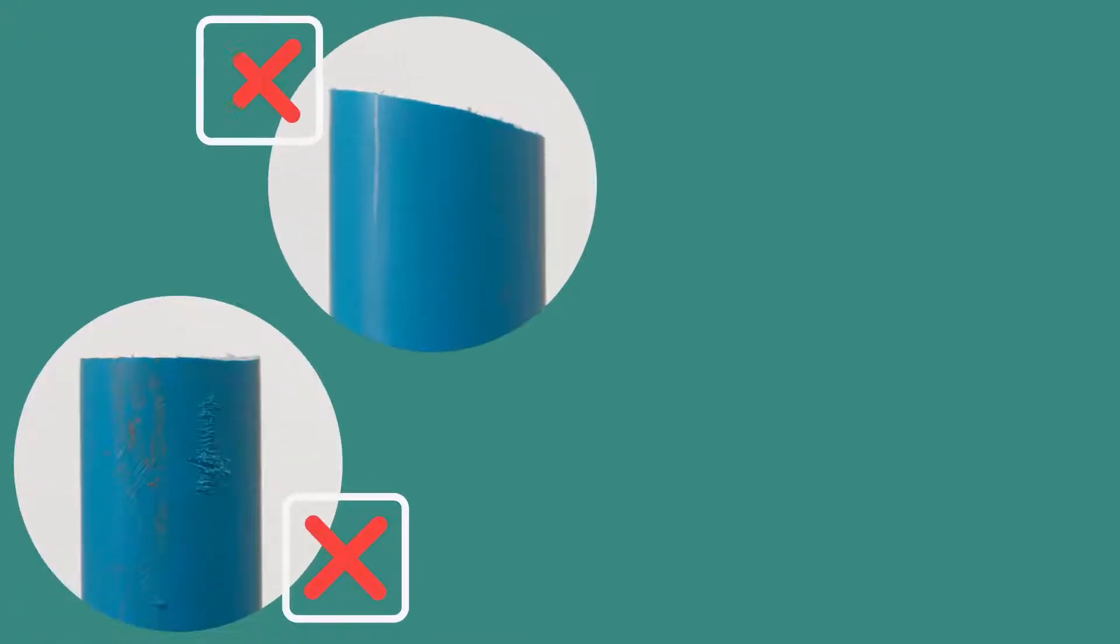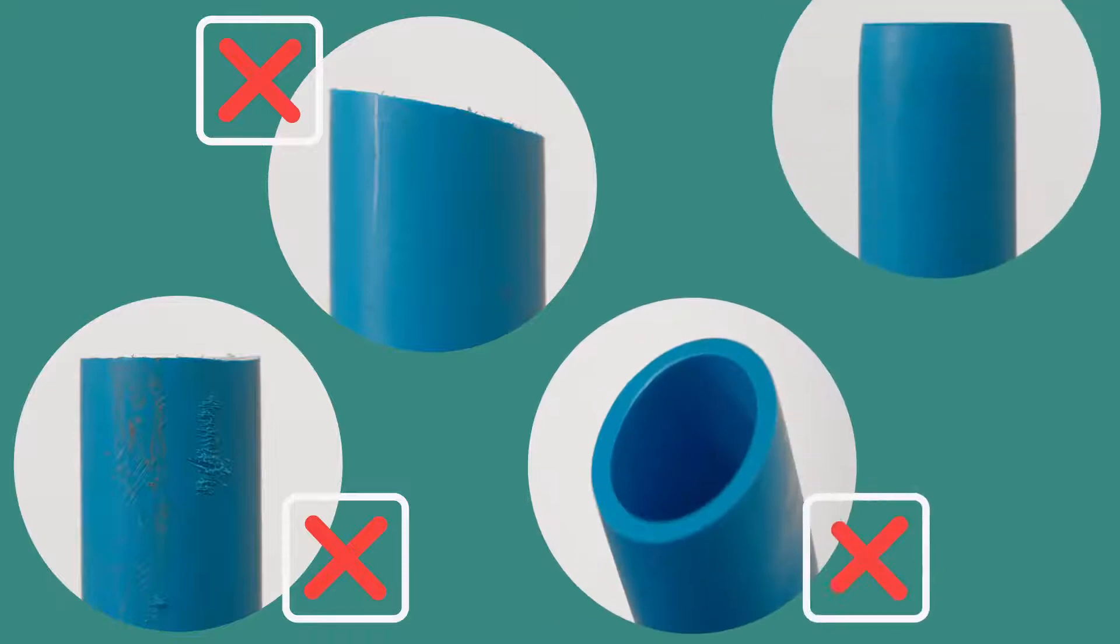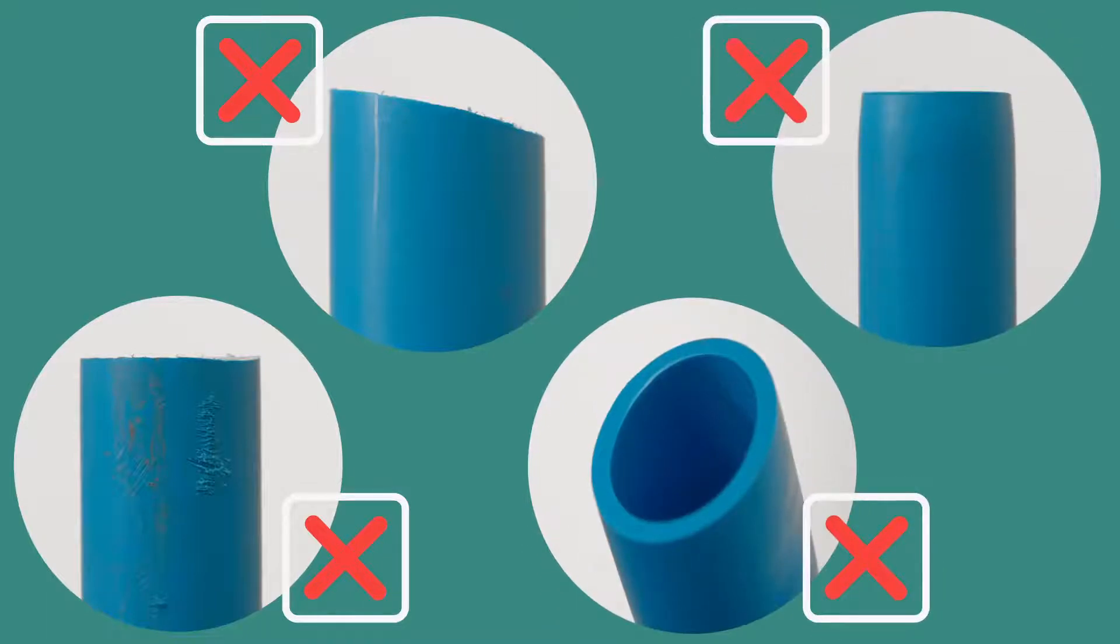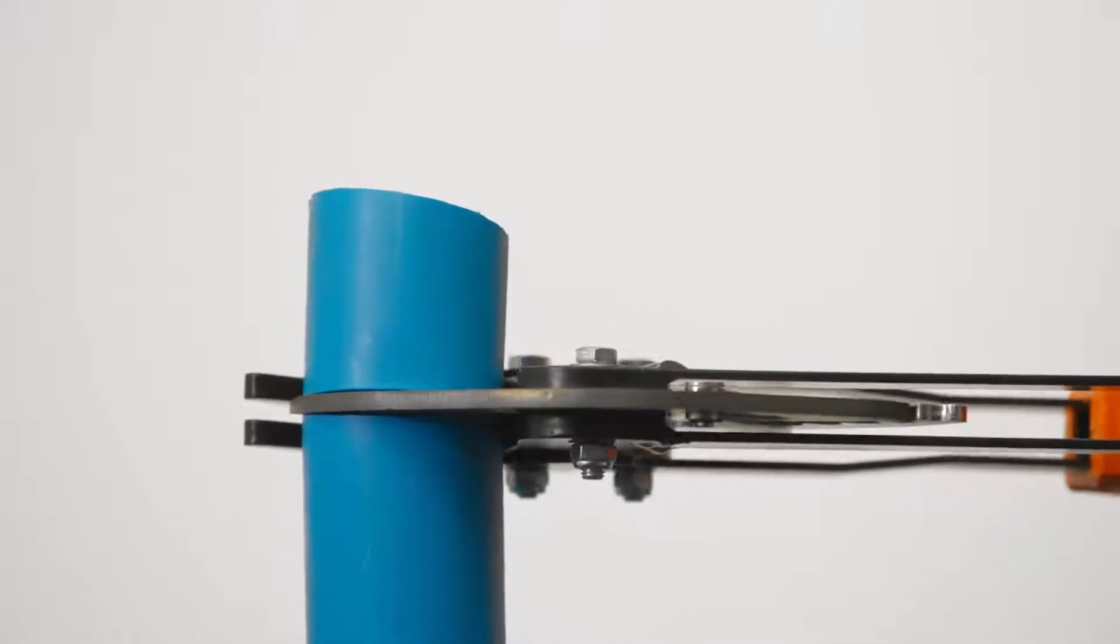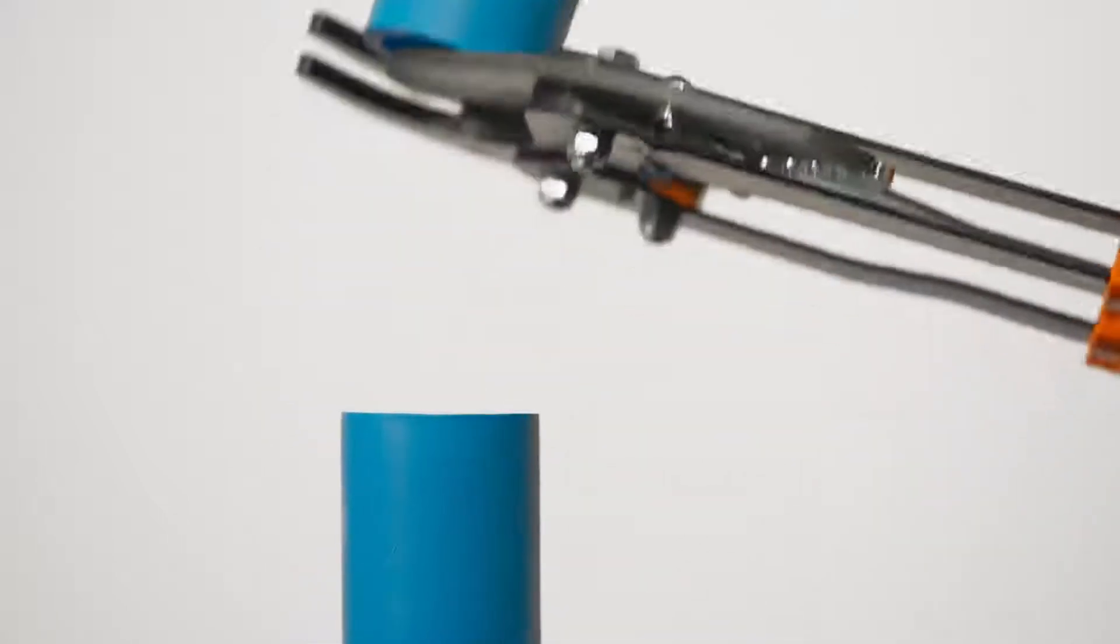Check the pipe to be jointed and ensure that it is free from damage. The end is cut square and is not showing signs of ovality or regression. Attempting to carry out a joint without addressing these points will compromise the correct operation of the fitting.